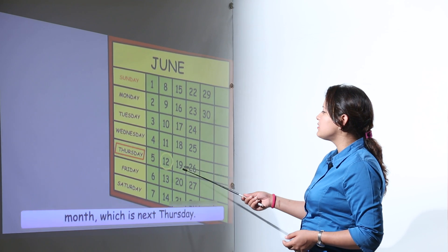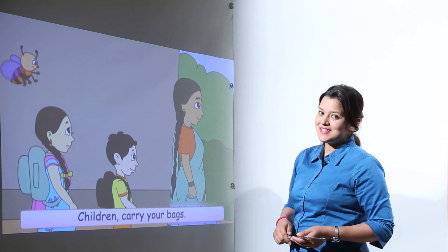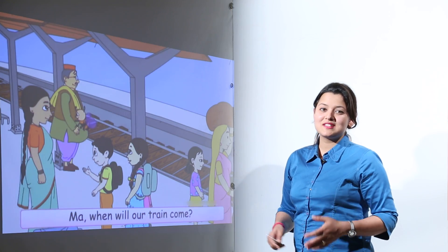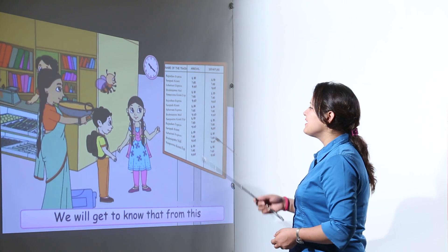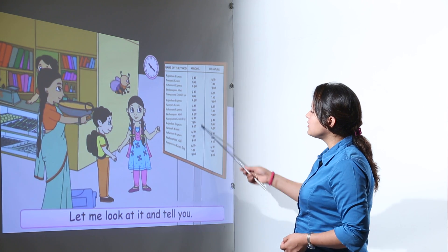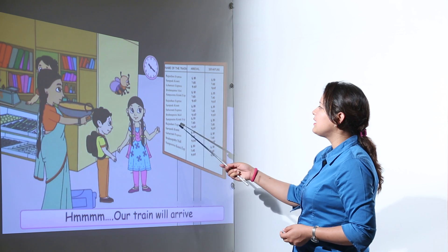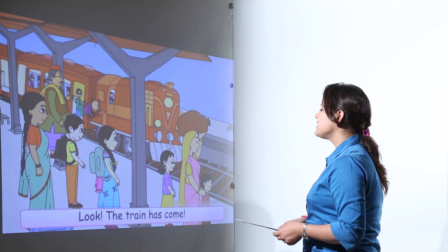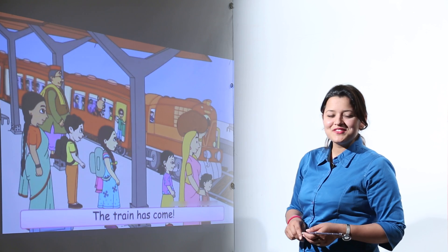They all had decided to go to the station on the day of their journey, and they all went. When they reached the station, they saw this chart and they came to know what time their train was arriving. Their train finally arrived after some time.